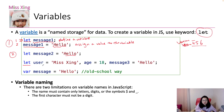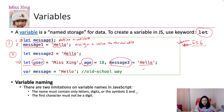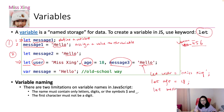Also, you can use 'let' to define multiple variables in one statement. For example: define a 'user' variable storing my name, another variable called 'age', and another variable called 'message3' equals 'hello'. So in one statement, I define three variables. It's your own choice — you can also write them as separate statements: 'let user = miss xing;', 'let age = 18;', 'let message3 = hello;'. These three separate statements achieve the same result as the one-line statement.